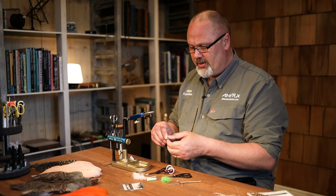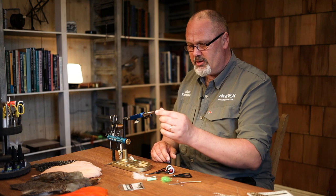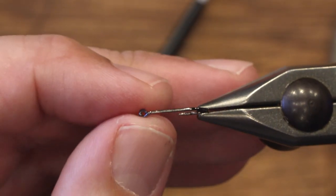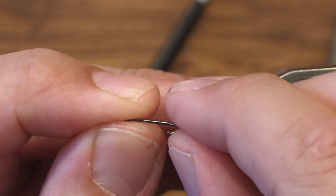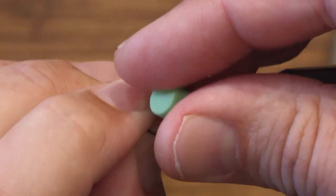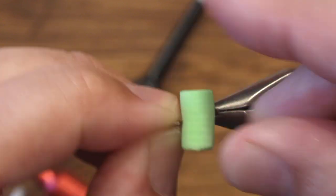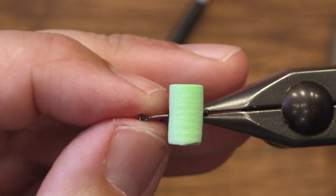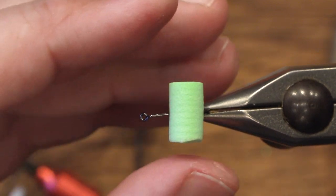We start with the foam cylinder. I pull the hook through the foam cylinder, and by doing this I'm sure that the foam will stay on the fly even if it starts to wobble around.